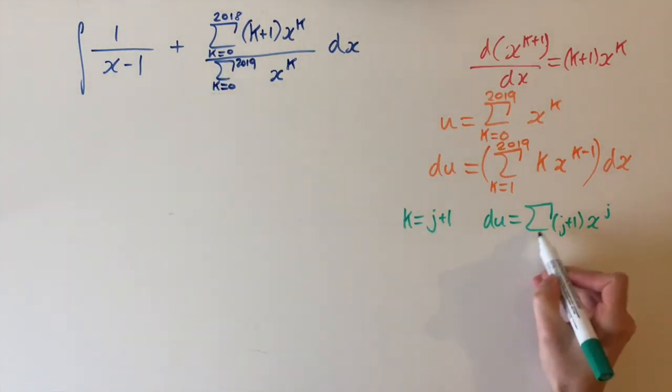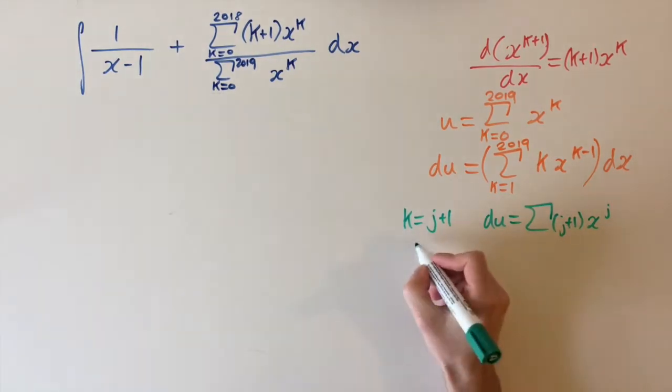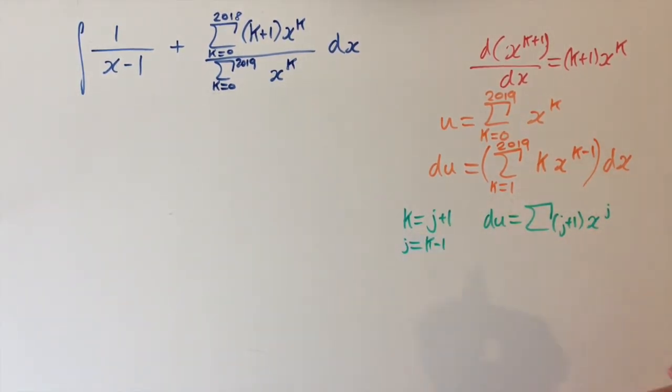So now we just need to think about these limits. And we want to express it in terms of j. So let's just rearrange for j. This is the same as j equals k minus 1. So to get the new limits, we just put in the values of k of the old limits in terms of this formula here.